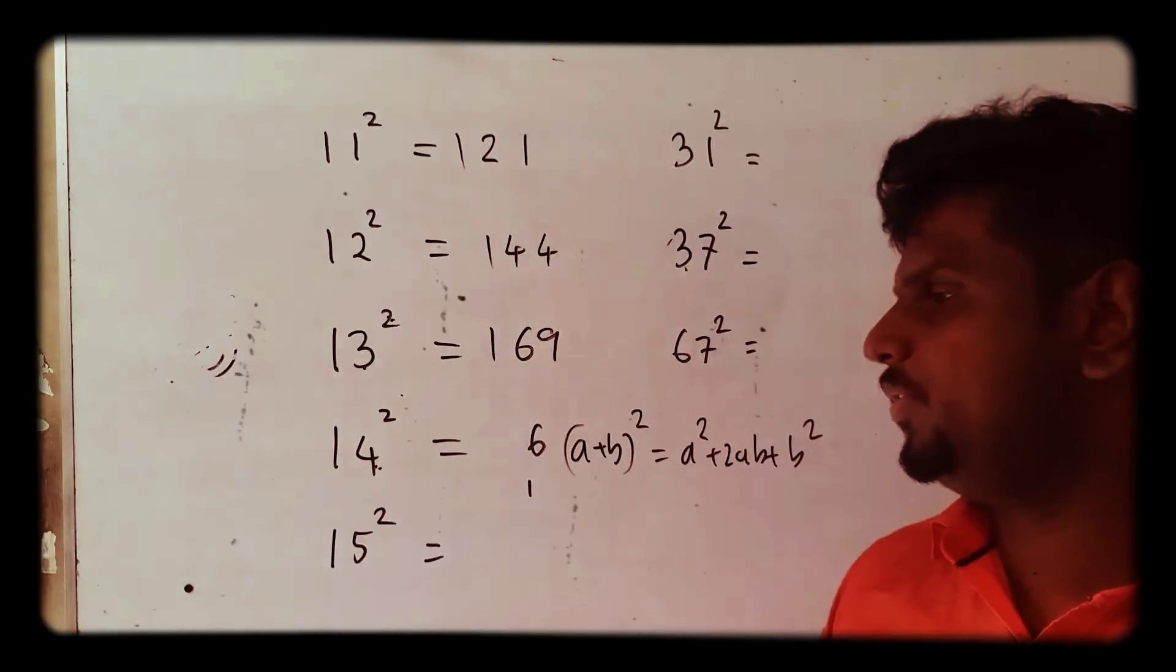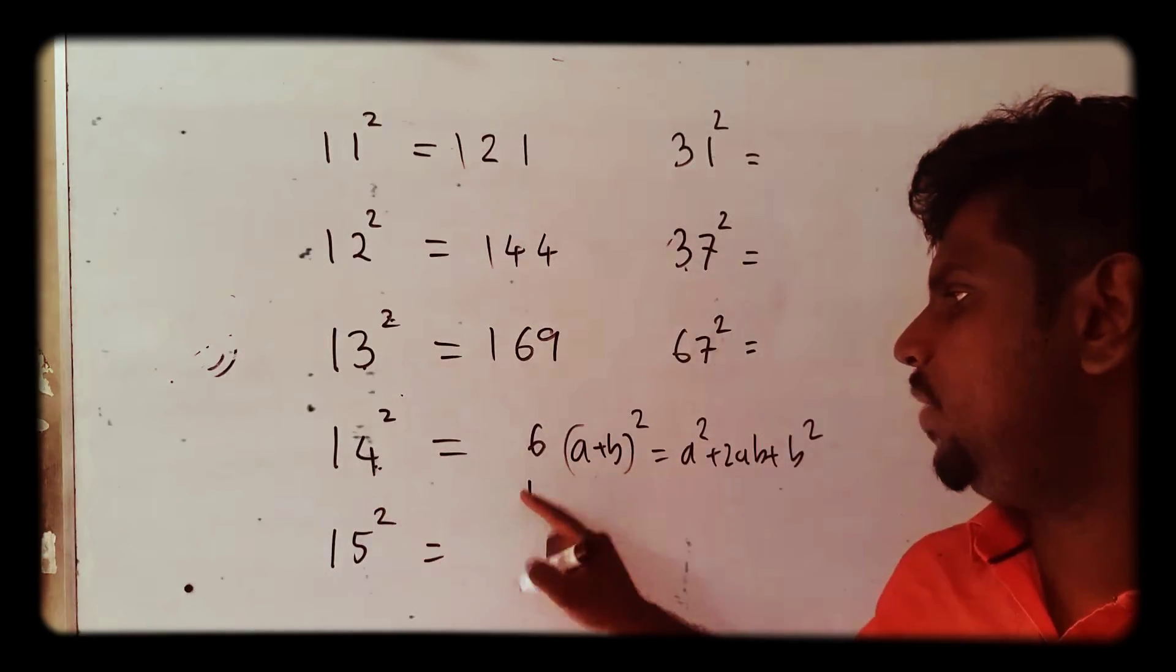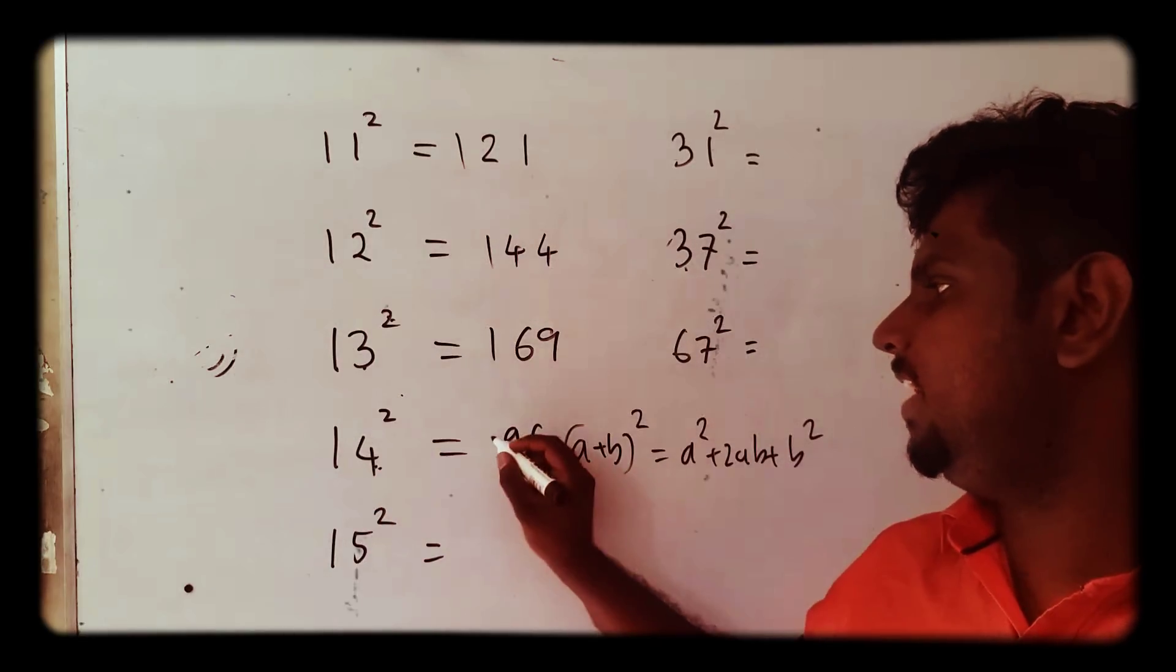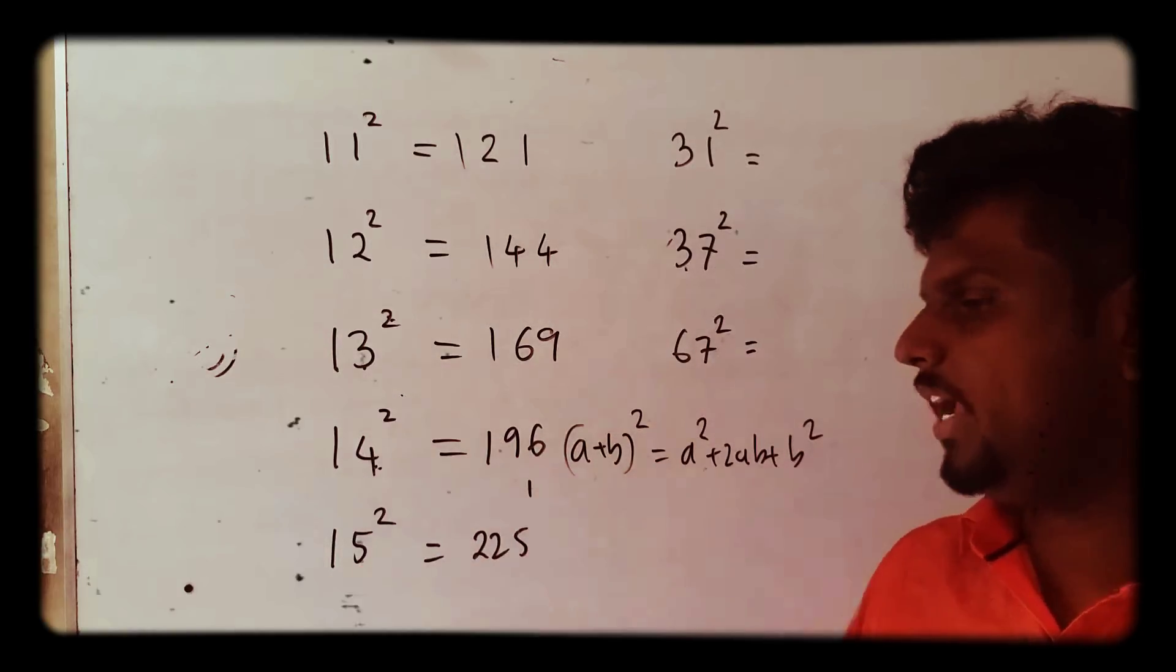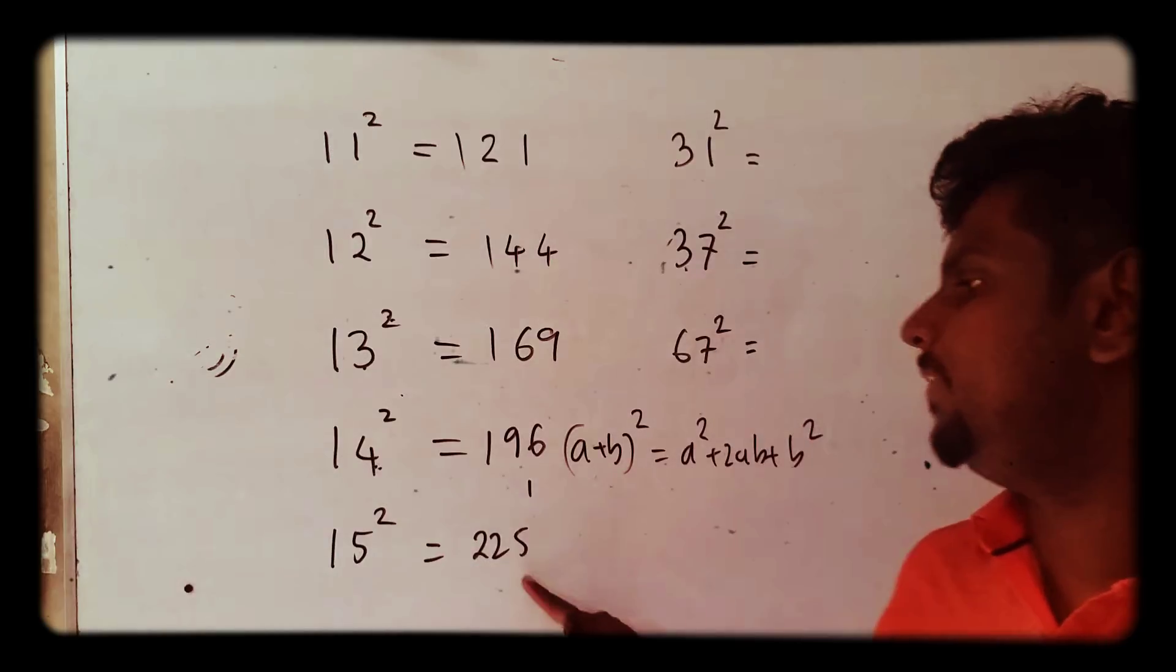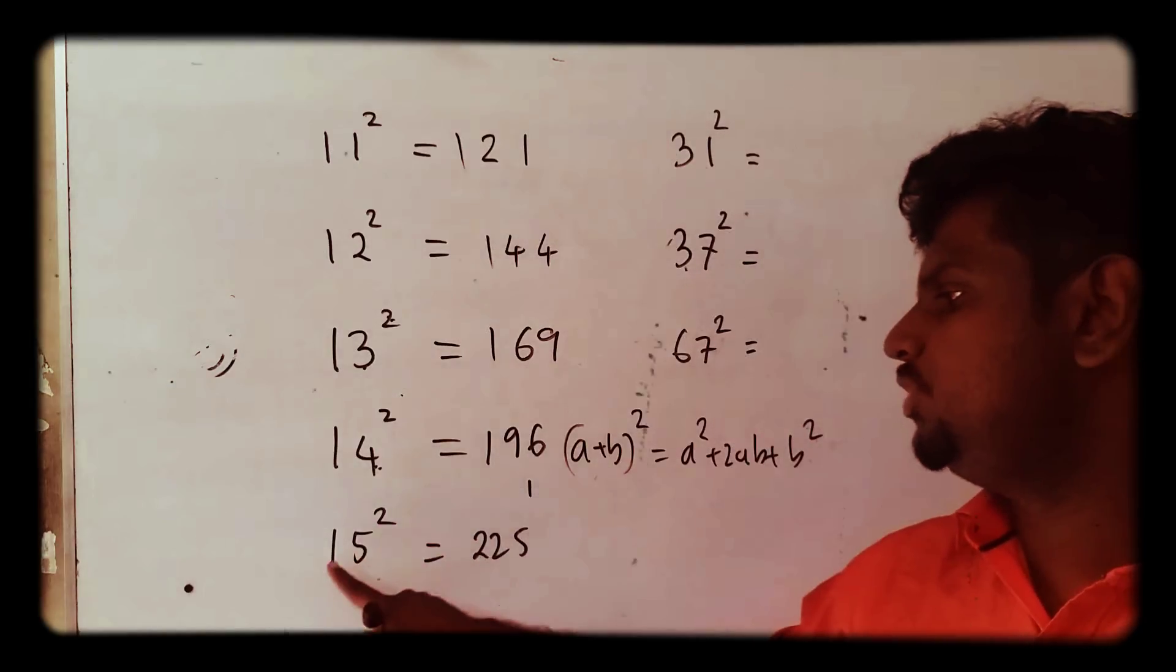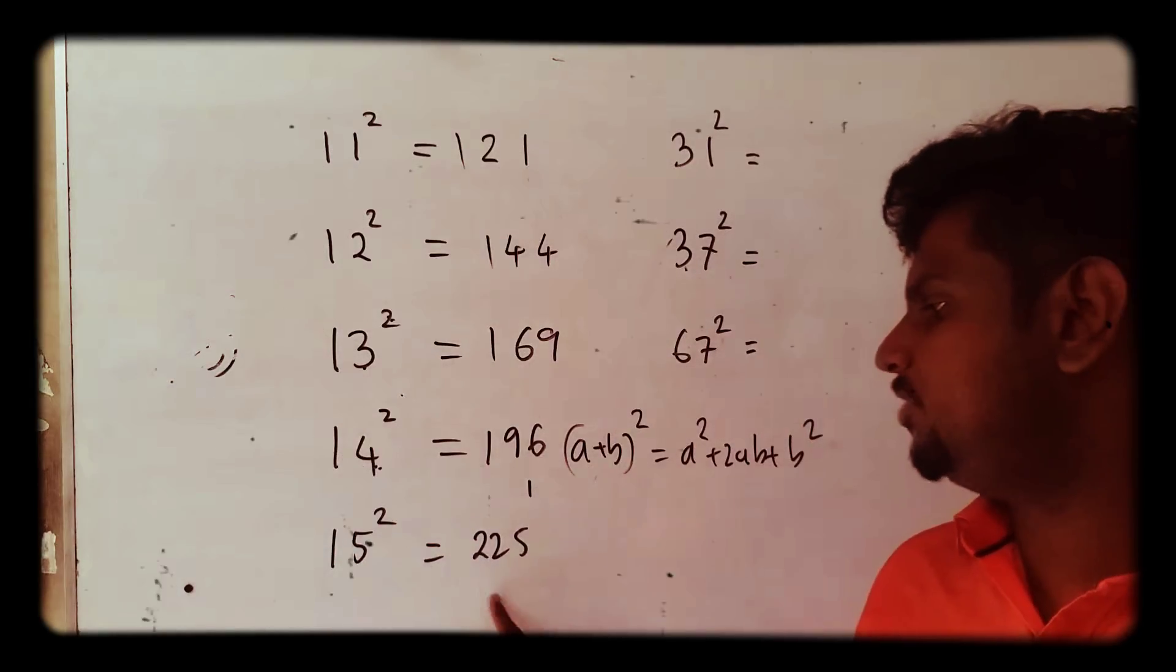15² - obviously that's 225. You can do my method, right? 5² = 25, 2 × 1 × 5 = 10, and there's already 2, then 1², then you add 1 here.